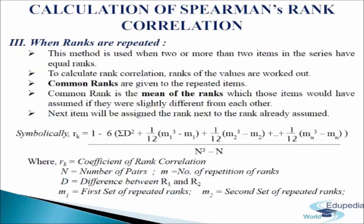Now we come to the third situation: when ranks are repeated. This method is used when two or more items in the series have equal ranks. In order to work out the rank correlation, common ranks are given to the repeated items. The common rank is the mean of the ranks which those items would have assumed if they were slightly different from each other. The next item is assigned the rank next to the rank already assumed. A modified formula is used, where d is the difference between r1 and r2, m equals the number of repetitions of ranks, n equals the number of pairs, and there may be more sets of repeated ranks in the series.